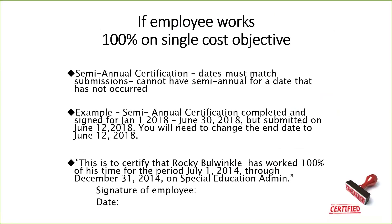The semi-annual certification must be signed by the supervisor who has knowledge that the employee is working in that role, and by the employee. It's completed after the fact — you cannot submit a semi-annual certification for dates that have not occurred yet. Make sure it accounts for the total activity indicated in your budget request. For example, if a semi-annual certification was completed for the period of January 1st through June 30th, but it was submitted on June 12th, it would be rejected because June 30th hasn't occurred. You can only request for time that has already occurred.